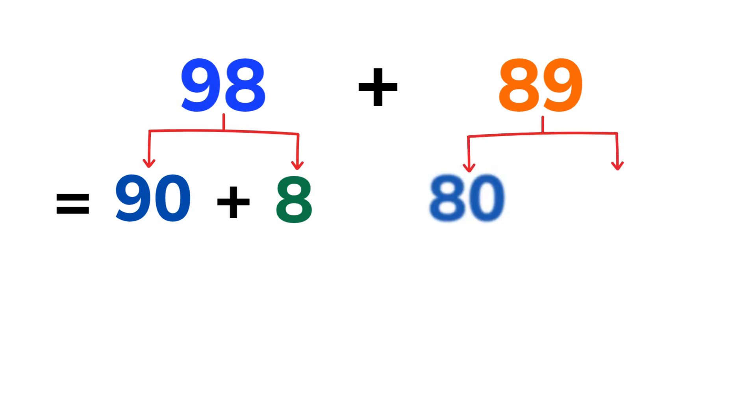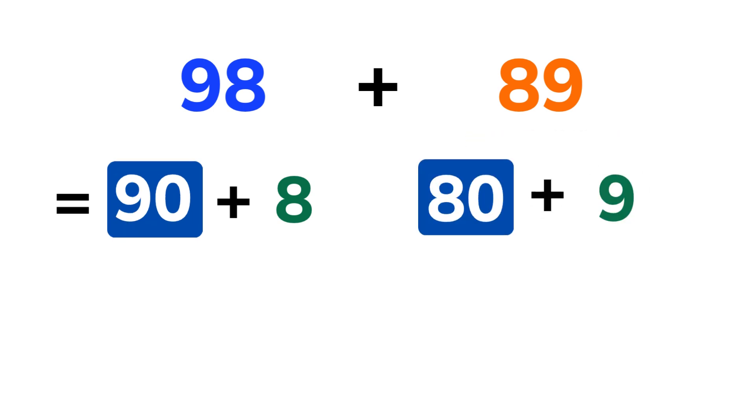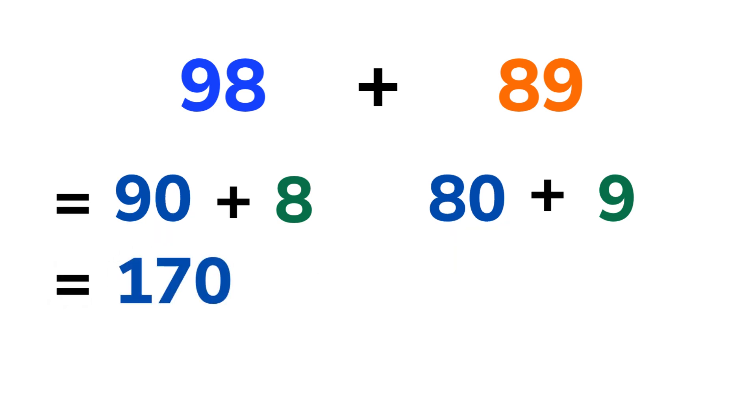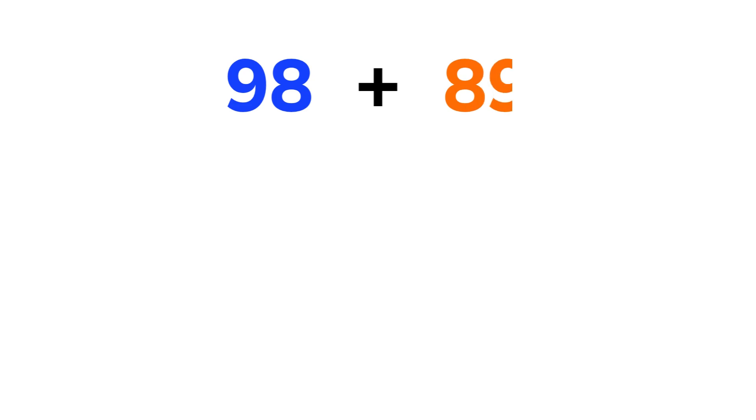89 is made of 80 tens and 9 ones. Now first add the tens. 90 plus 80 equals 170. Then add the ones. 8 plus 9 equals 17. Now combine the results. 170 plus 17 equals 187. So, 98 plus 89 equals 187.